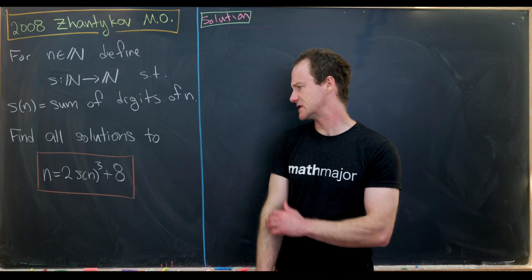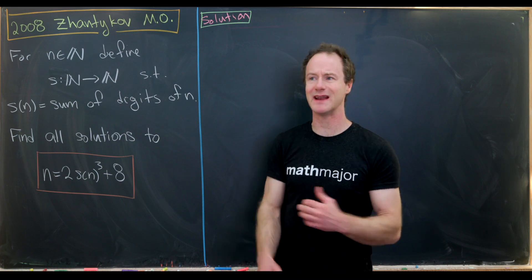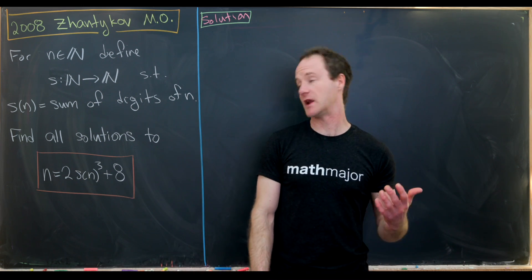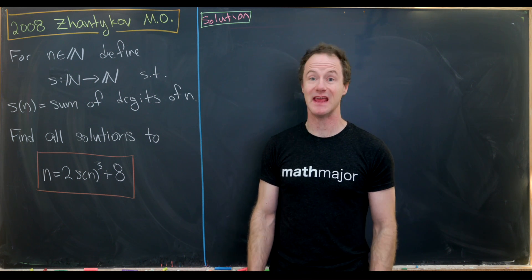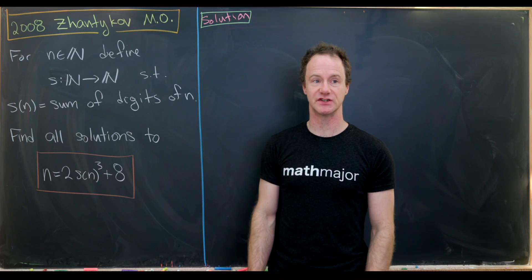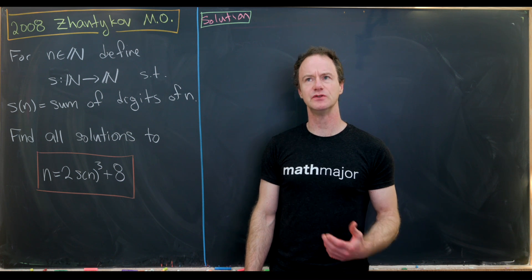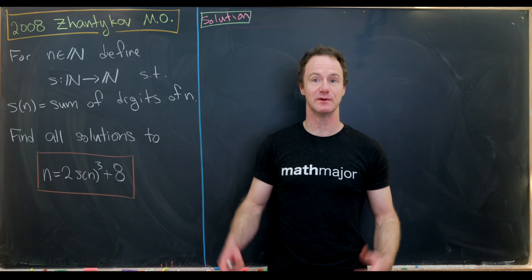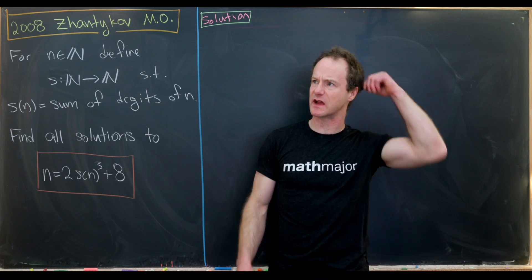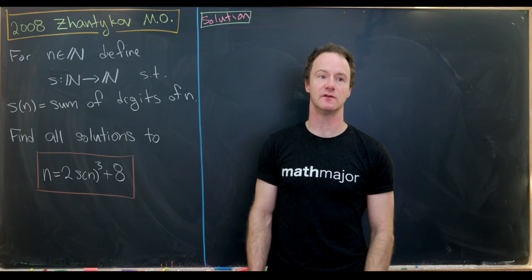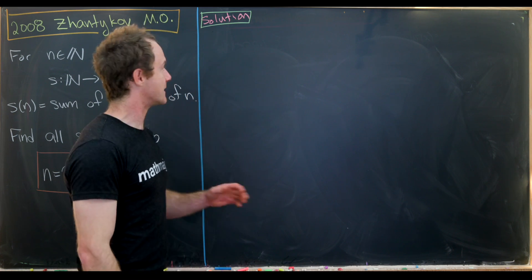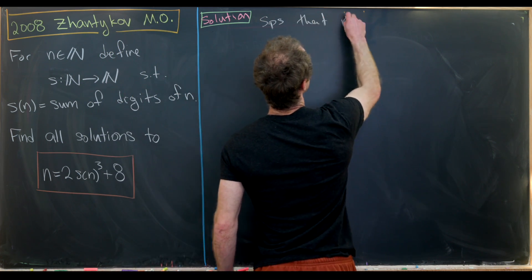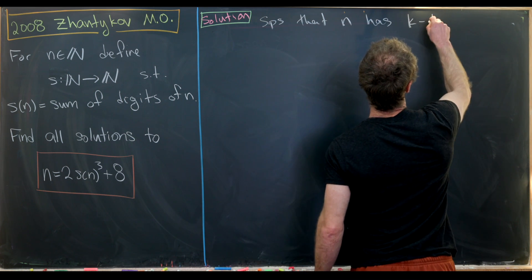Let's get into the solution. We'll use two main ideas. One is that n and s(n) are congruent mod 9 — we'll use that toward the end. The other is a typical way of estimating the maximum size of s(n) to pare down the problem to a reasonable finite set. Let's start by supposing that n has k total digits.